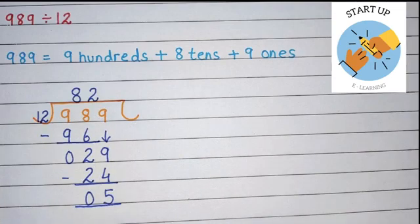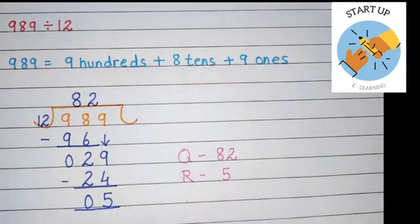Here we are going to stop our sum because there is no more digit left in the dividend and 5 is smaller than the divisor. That means the remainder is smaller than the divisor. So here, the quotient is 82 and the remainder is 5.